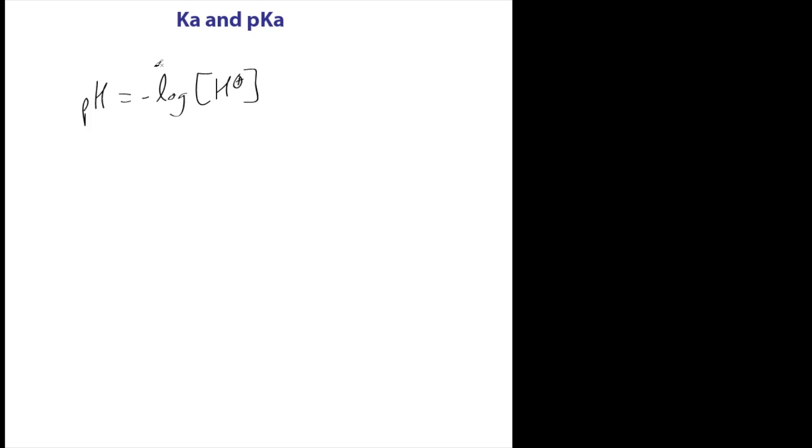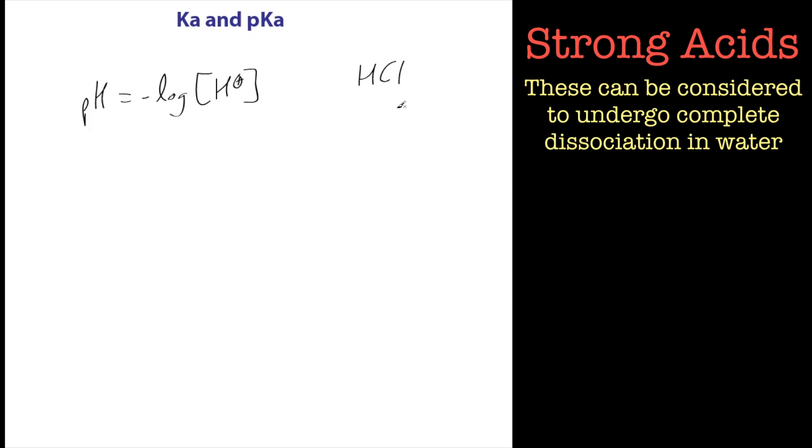And that's really only applicable for strong acids, things like HCl, which completely dissociate to give H plus and Cl minus in this case. So a strong acid is one which will give an equal number of protons for the amount of acid that was added.